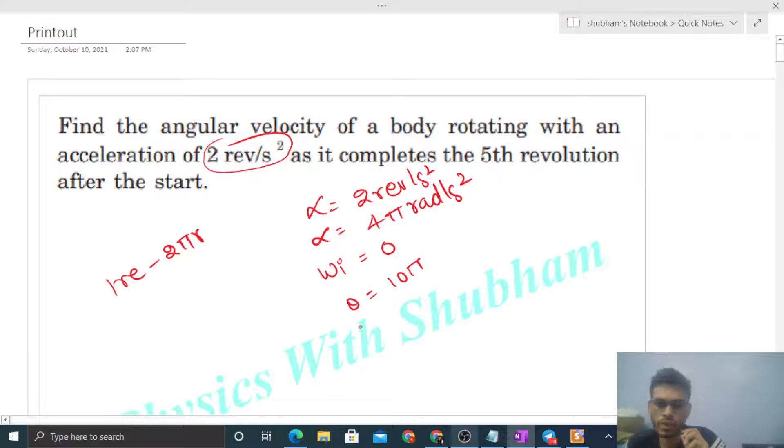We have to find out final angular velocity. How to find that? Simply use omega final square minus initial omega square equals 2 into alpha into theta. Everything is given. Omega final square minus initial omega will be 0, that equals 2 into alpha that is 4π, and theta is 10π.